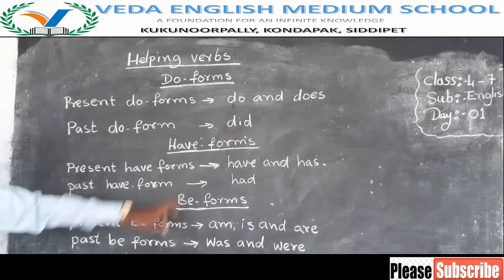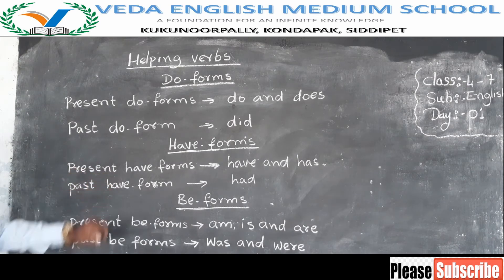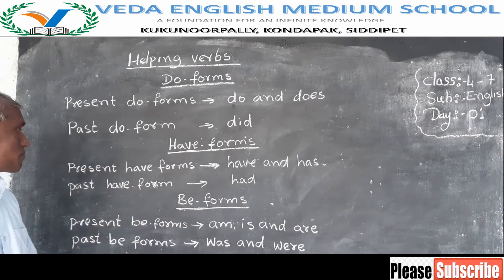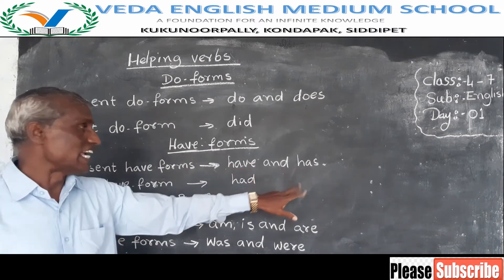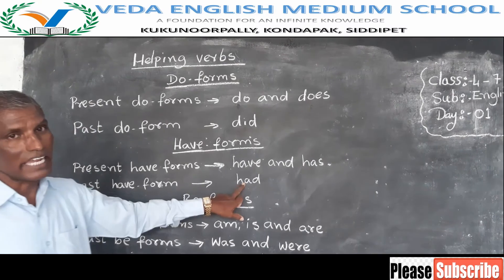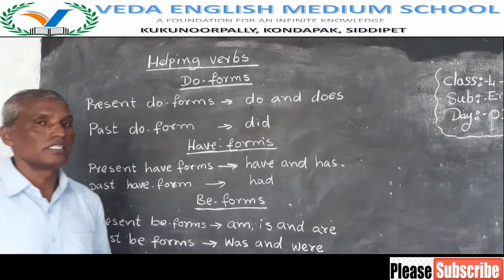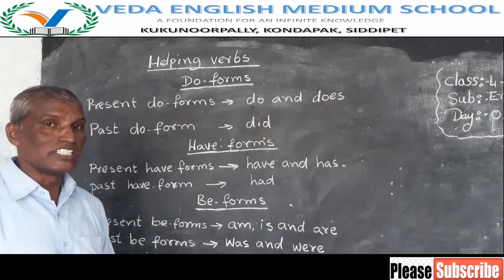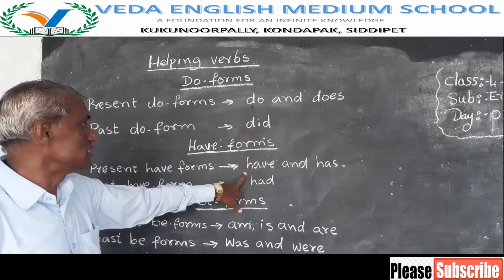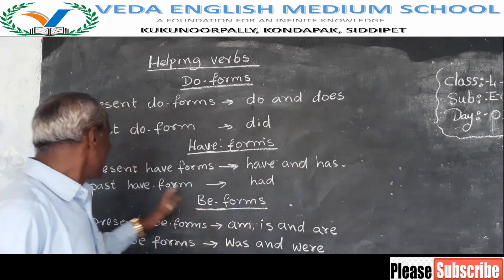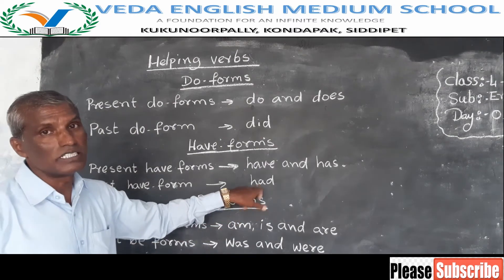Now we have have forms. They also have present and past forms. The present have forms are have and has. The past have form is had. We use these have forms to make perfect tense. To make present perfect, we use have and has. To make past perfect tense, we use had.